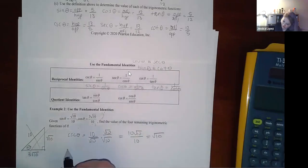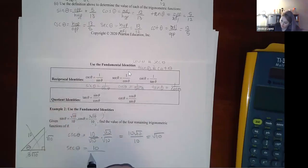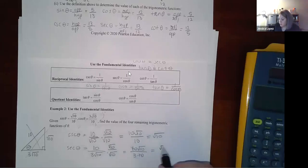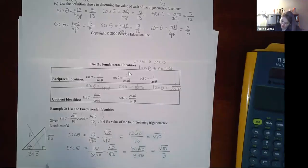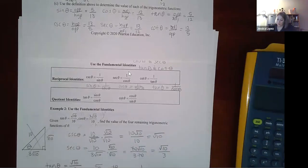Secant is the reciprocal of cosine: 10/(3√10). Rationalizing gives 10√10/(3·10) = √10/3. For tangent, take sine over cosine: (√10/10) ÷ (3√10/10) = (√10/10) × (10/3√10). The √10s and 10s cancel, leaving 1/3. Cotangent is the reciprocal of tangent: 3/1 = 3.